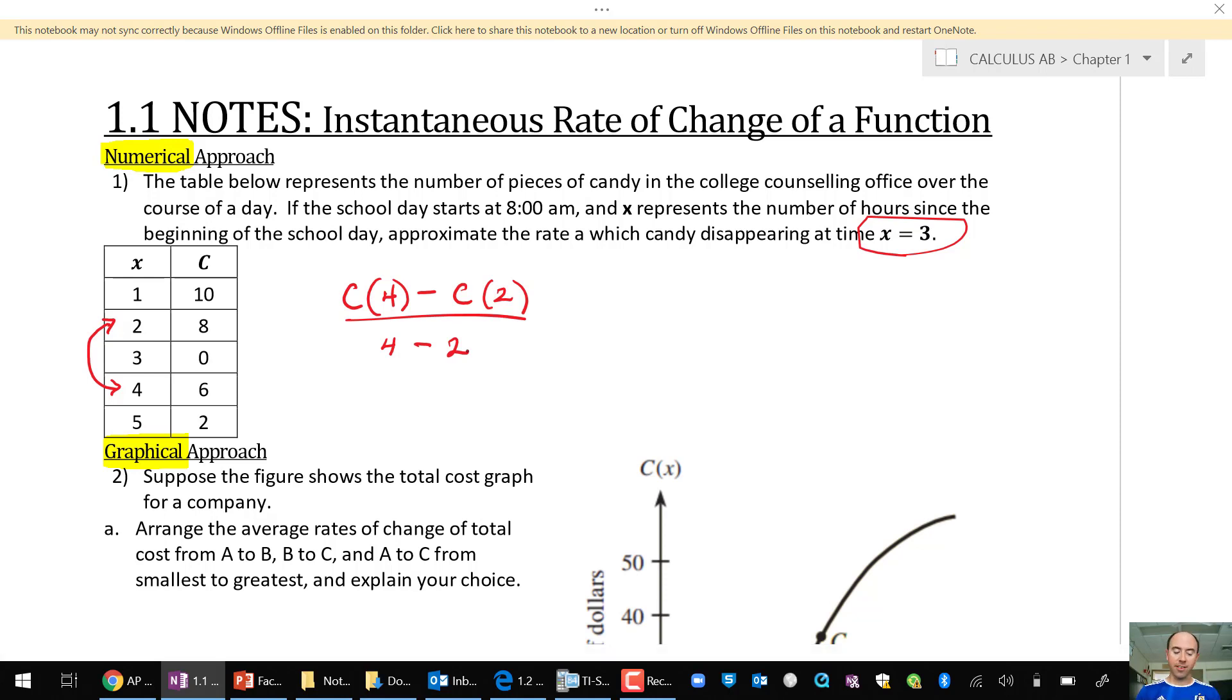From the table, we can get our answers. c of 4 is going to be 6, c of 2 is 8, and we'll be dividing that by 4 minus 2. So negative 2 divided by 2 is negative 1. And let's write down proper units: pieces of candy, and then per, we are in hours. So pieces of candy per hour.